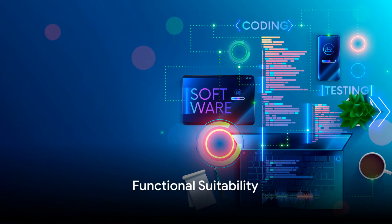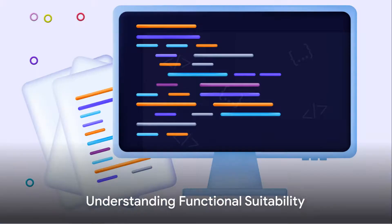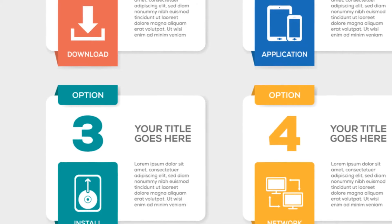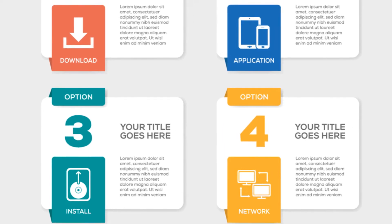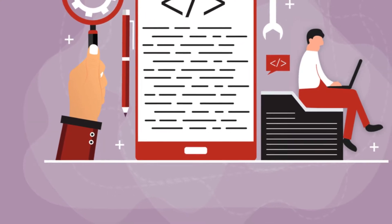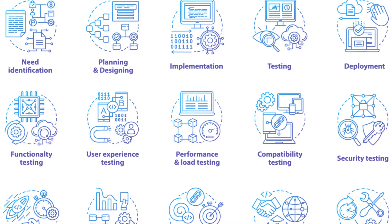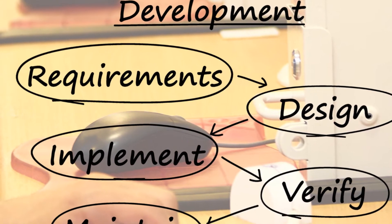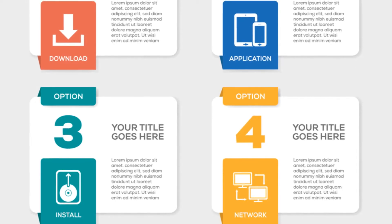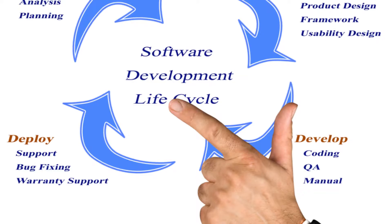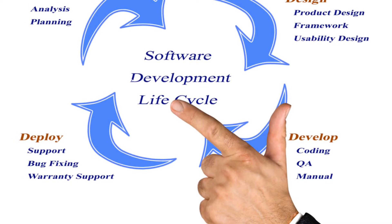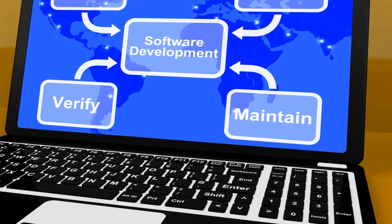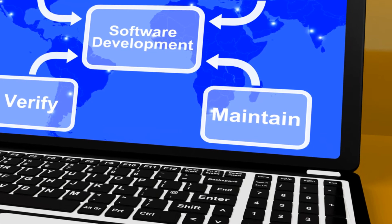Let's talk about the first characteristic: functional suitability. In simple terms, it refers to the degree to which a software product provides functions that meet both stated and implied needs when used under specified conditions. Think of it as the software's ability to do what it's designed to do, effectively and efficiently. Functional suitability is not just about the software doing its job, but doing it well and providing value to the user — ensuring it's not just functional, but suitable for the task at hand. Let's break it down into its sub-characteristics: functional completeness, functional correctness, and functional appropriateness.